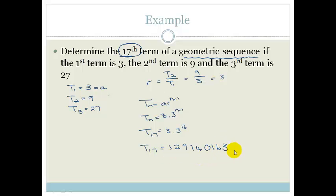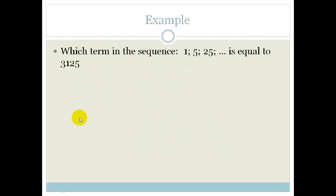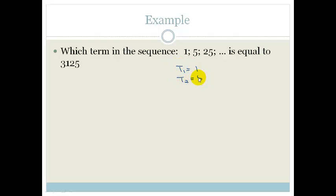Go and practice that and make sure you can get the same answer. Now let's move on to the next question. Which term in the sequence 1, 5, 25, etc. is equal to 3,125? So T1 is 1, T2 is 5, and T3 is 25.